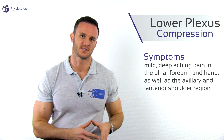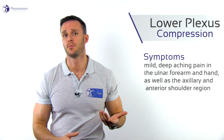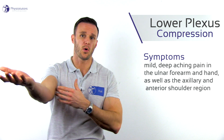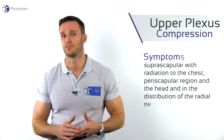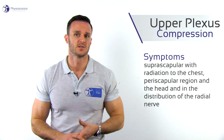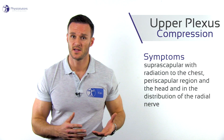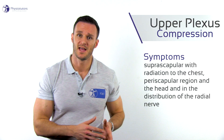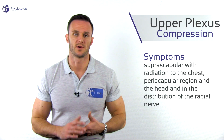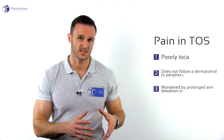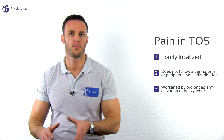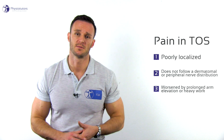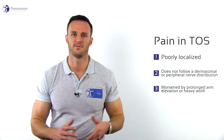If the lower plexus is involved in TOS, patients often report mild deep aching pain in the ulnar forearm and hand, as well as the axillary and anterior shoulder region. In upper plexus compression, the symptomatology is often suprascapular with radiation to the chest, periscapular region, and the head, and in the distribution of the radial nerve. In general, pain in TOS tends to be poorly localized, does not follow a dermatomal or peripheral nerve distribution, and is worsened by prolonged arm elevation or heavy work.